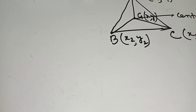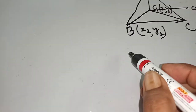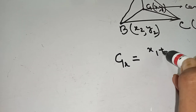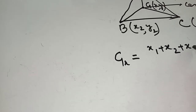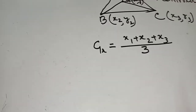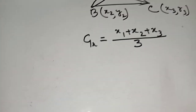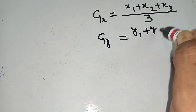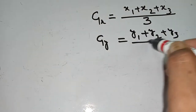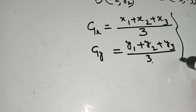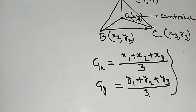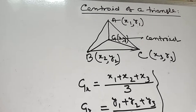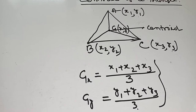G has coordinates (x, y). The coordinate Gx is equal to (x1 + x2 + x3) / 3, and Gy is equal to (y1 + y2 + y3) / 3. This is the coordinate of the centroid. Centroid is the point where the medians of the triangle meet at a point — that is called the centroid.